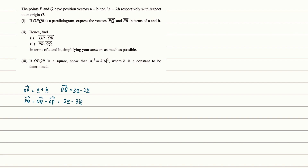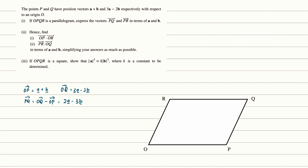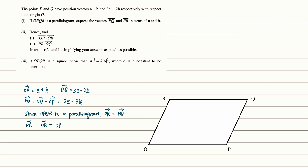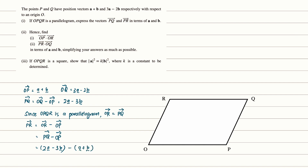Next, we find vector PR. Always make use of the information from the question. Since OPQR is a parallelogram, if we sketch it, vector OR equals vector PQ. So vector PR equals vector OR minus vector OP, which is equivalent to vector PQ minus vector OP, giving us 2A minus 3B minus A plus B. Simplifying, we get A minus 4B. So we have vectors PQ and PR respectively.